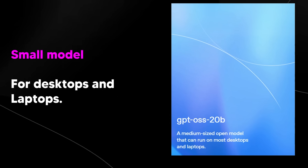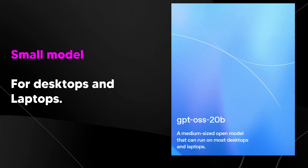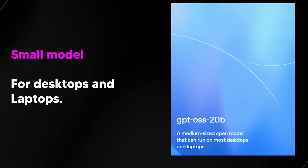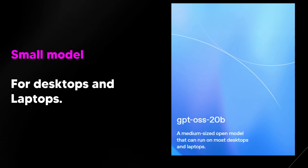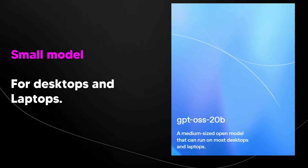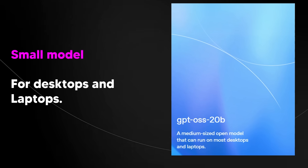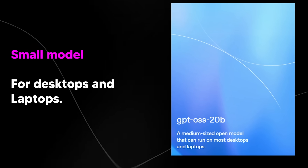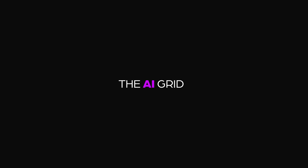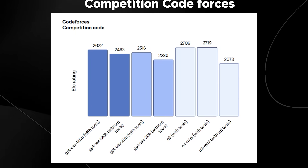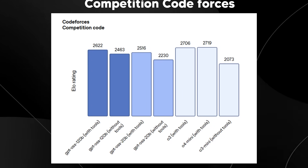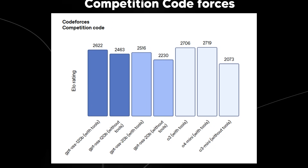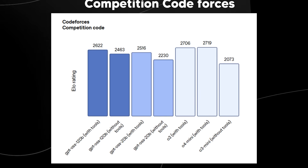The open source release was a surprise for everyone, because with a name like OpenAI most people would have expected this company to go open source by now. But that wasn't the main surprise — the benchmarks show these models are actually rivaling state-of-the-art systems that OpenAI has released.